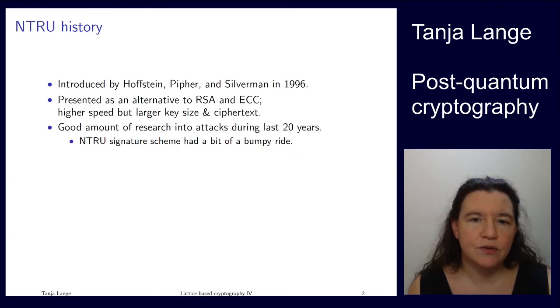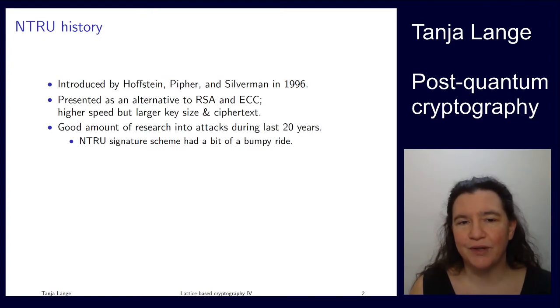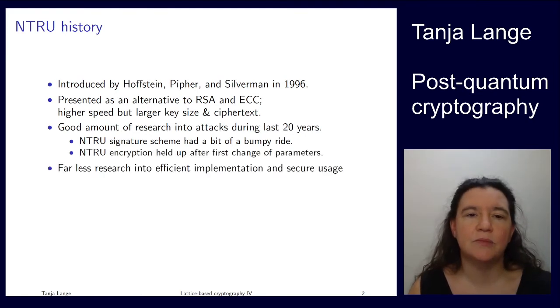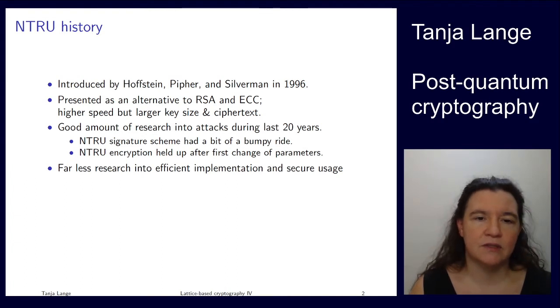There's been a good amount of research in attacks. As I mentioned already, they got broken before it even got published. The signature scheme had a lot of attacks. We've just seen the GGH crypto signature system, so also their signatures gave away some information. And similarly for NTRU signatures didn't work out well. The encryption system, apart from the very first parameters of the preprint, has held up very fine after this change of parameters. However, there has been less research over the time for secure implementations, or secure usage of it, because the designers took out a patent.